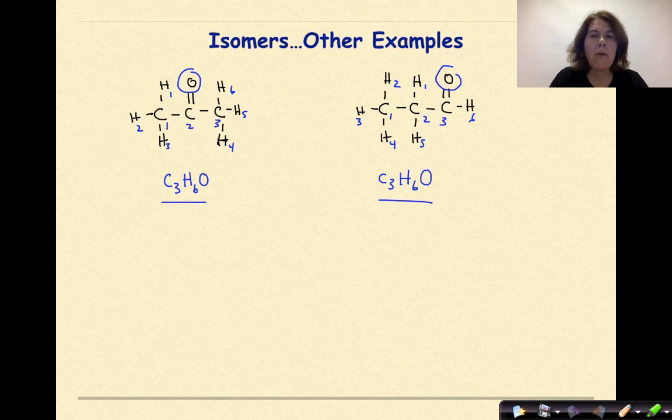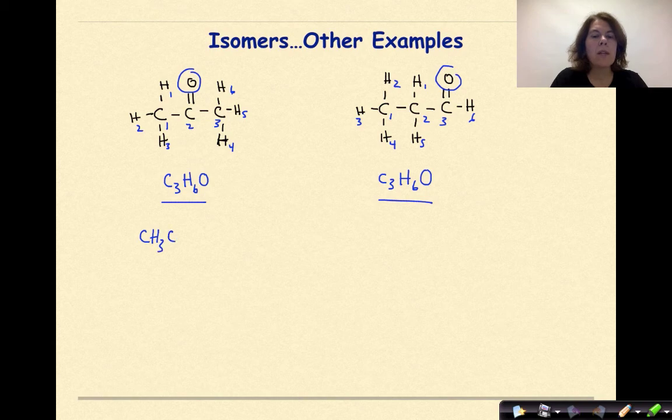If I was to write the condensed structural formula for the one on the left, I would write CH3CO, representing that double bonded oxygen. And then finally, CH3.